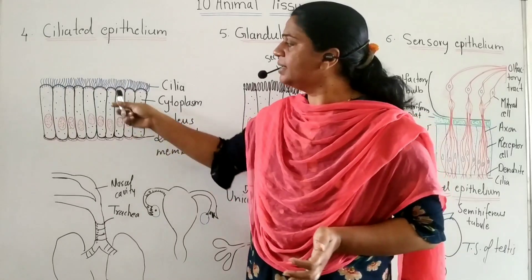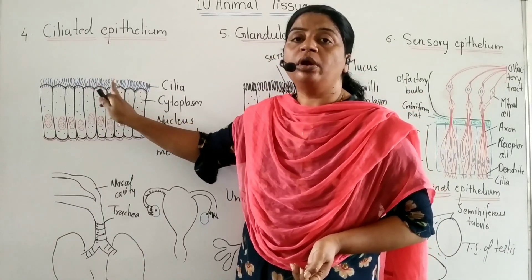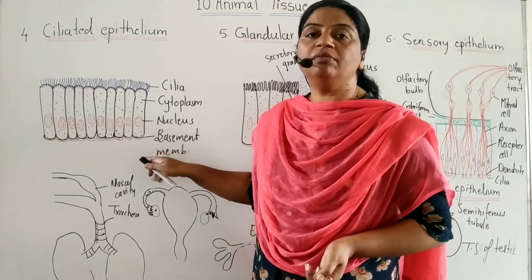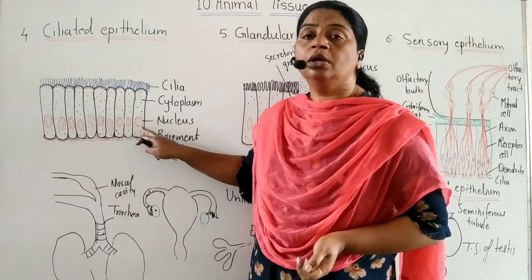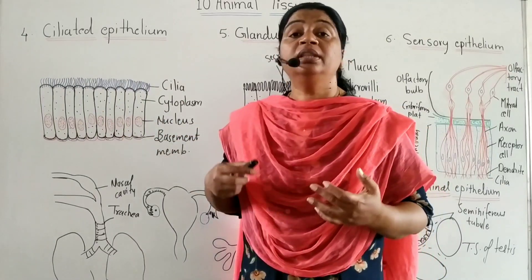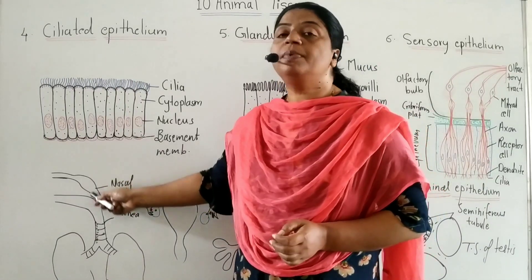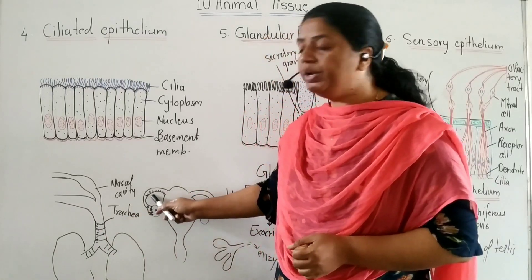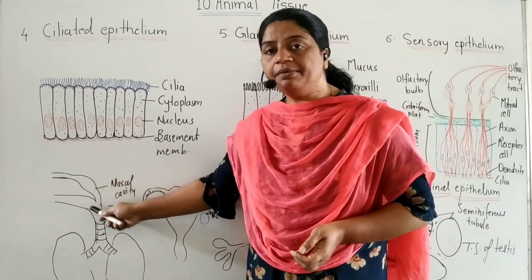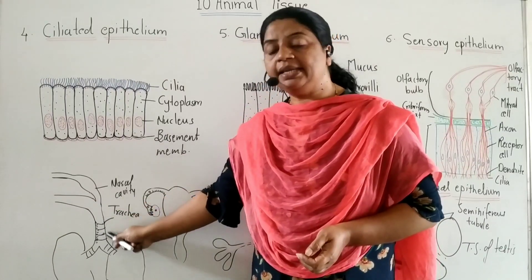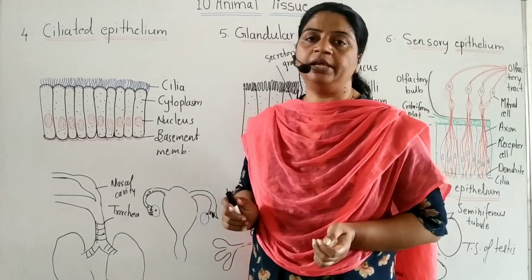Ciliated epithelial tissue cells are columnar or cuboidal. The location of ciliated epithelium: it is present in the buccal cavity of frog, upper respiratory tract — meaning nasal cavity, pharynx, trachea — and the oviduct of vertebrates.